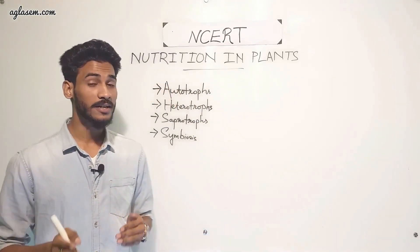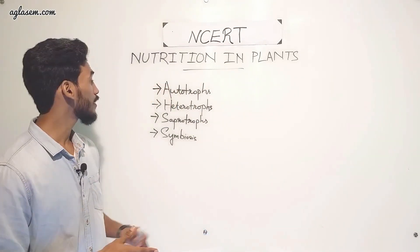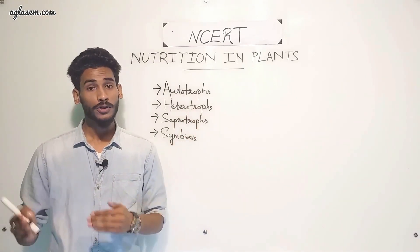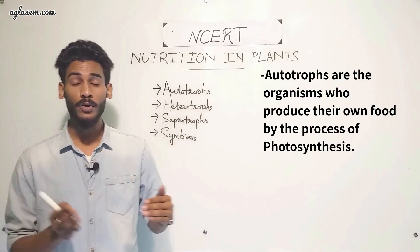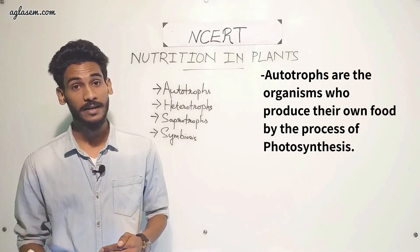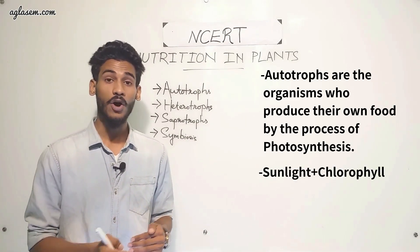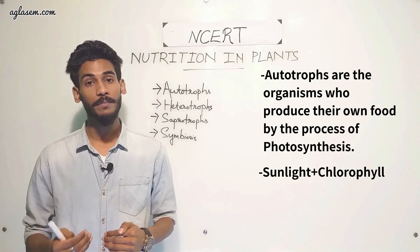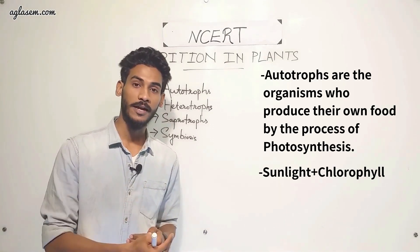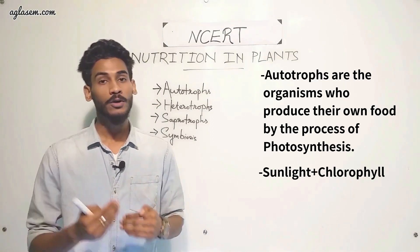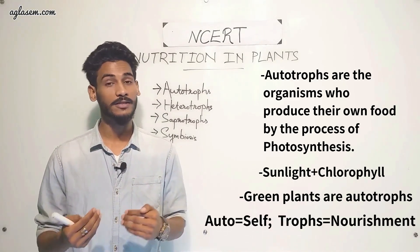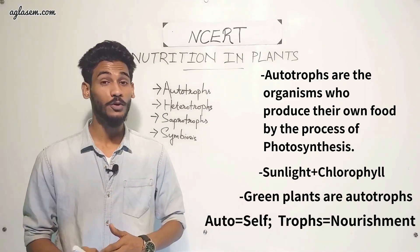The first terminology that comes in this chapter is autotrophs. Autotrophs are the organisms that can produce their own food by the process of photosynthesis in the presence of sunlight and the green pigment called chlorophyll, and produce oxygen and glucose. They use this glucose for themselves and release this oxygen to the surroundings.